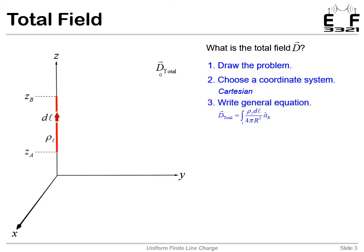Write our general equation. So we go back to the table that was in our recipe. And this is a general equation where we integrate over the line. And inside here is essentially the equation for the field around a point charge, generalized to a differential length. And we integrate that over the line to get the total D field.